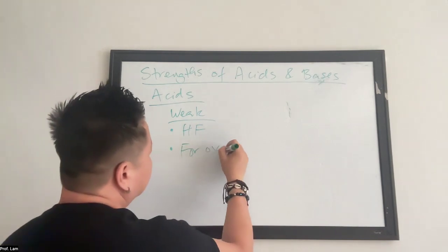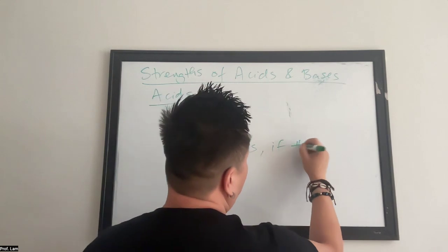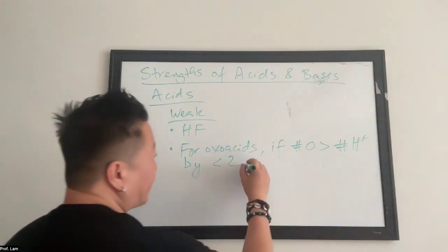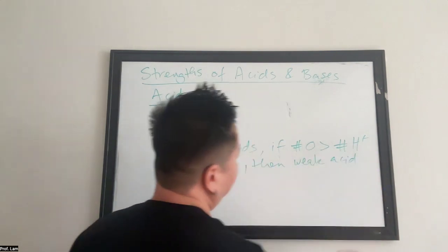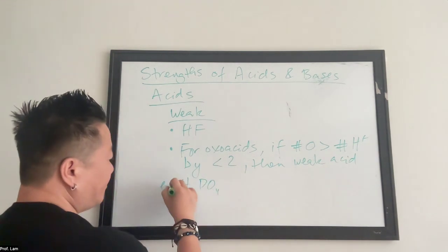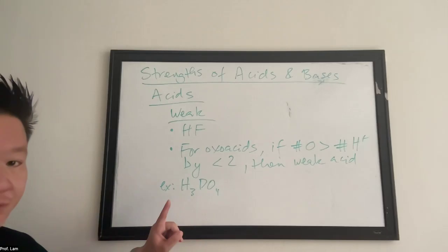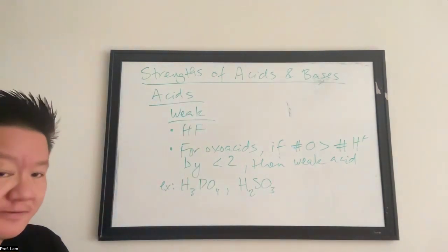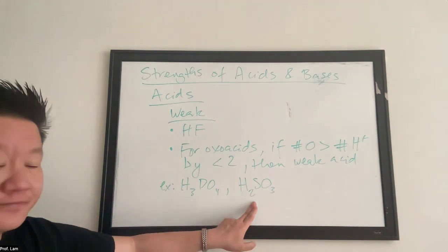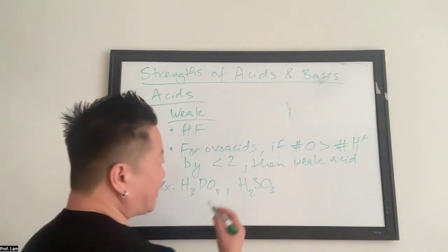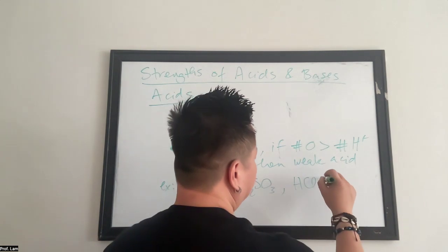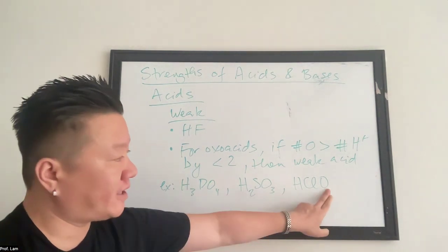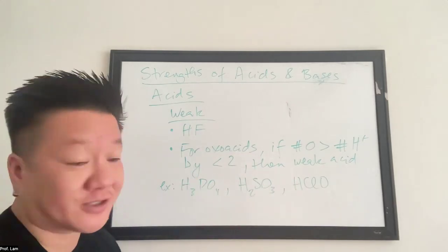And then for oxoacids, if the number of oxygen only is greater than the number of protons by less than two, then it's a weak acid. So H3PO4 is an example. Four minus three is one. So that's less than two. Sulfurous acid, H2SO3. Three minus two is one. So it's weak. HClO. This one is hypochlorous acid. One oxygen minus one proton. That's zero, less than two. So it's weak.